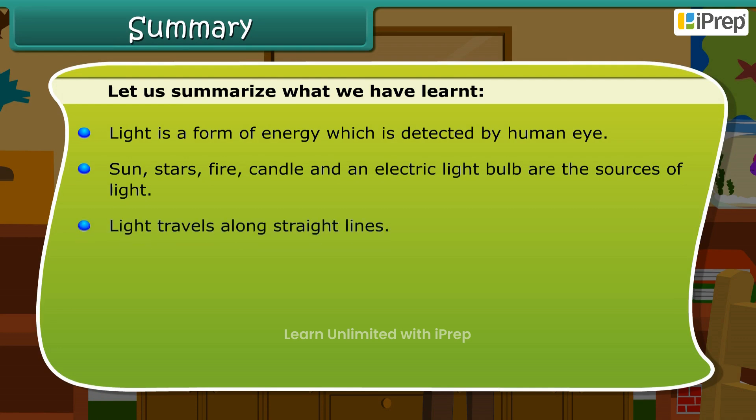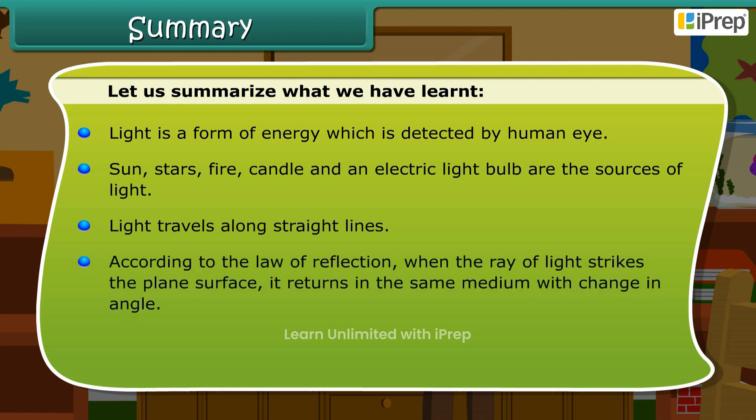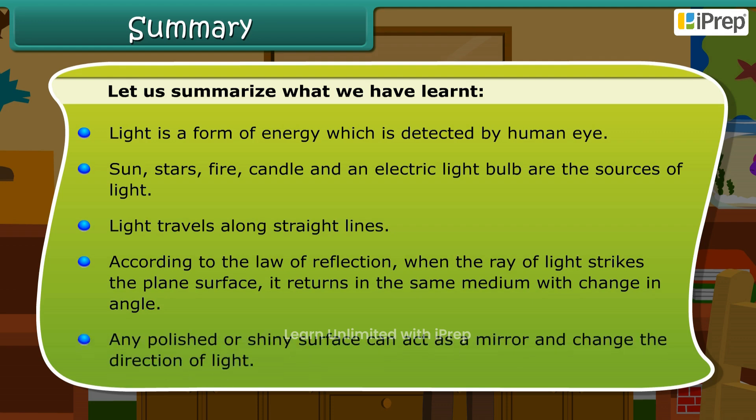Light travels along straight lines. According to the law of reflection, when the ray of light strikes the plane surface, it returns in the same medium with a change in angle. Any polished or shiny surface can act as a mirror and can change the direction of light.